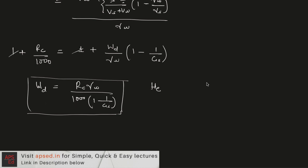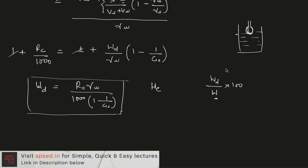We divide W_d by the initial concentration. For initial concentration we take the hydrometer reading at the start of the experiment, which gives us the initial concentration. After some time passes, we use subsequent readings to find the percentage finer.